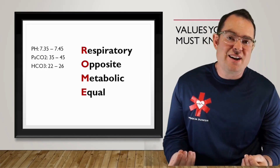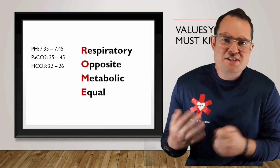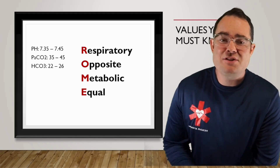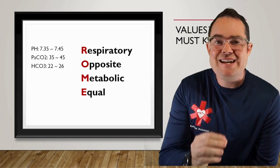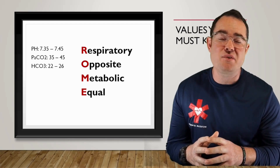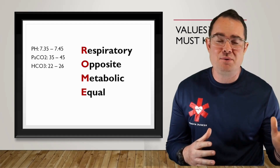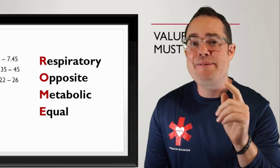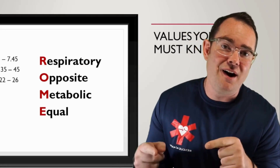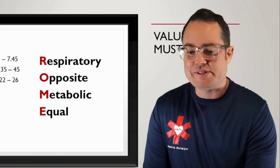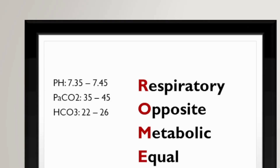Now that we covered those differences, let's talk about Rome. Before I jump right into Rome, let's take a look at these values because you need to write them down. I recommend you have these for your data dump if you're sitting for the National Registry — I bet you'll have at least two questions on ABGs. pH is 7.35 to 7.45. PaCO2 is 35 to 45. And HCO3 is 22 to 26. If you don't have those written down or memorized, please do so.